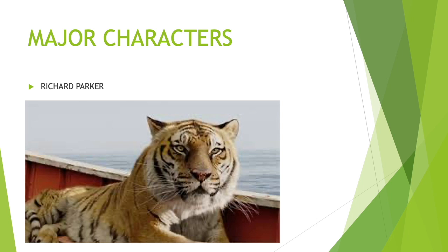The next major character is Richard Parker. He is a royal Bengal tiger, weighing 450 pounds or 204 kg and measuring 2.8 meters long. The tiger's captor, Richard Parker, named him Thirsty, but a shipping clerk reversed their names in error. Pi shares the lifeboat with the tiger for the duration of his ordeal. The tiger kills the hyena on the lifeboat and later the blind cannibal. Pi trains Richard Parker to respect Pi's alpha male dominance, thus enabling them to coexist on the lifeboat. Pi describes the tiger's godlike beauty, symmetry, and power. For Pi, the tiger is his companion during his ordeal and the reason for staying alive.